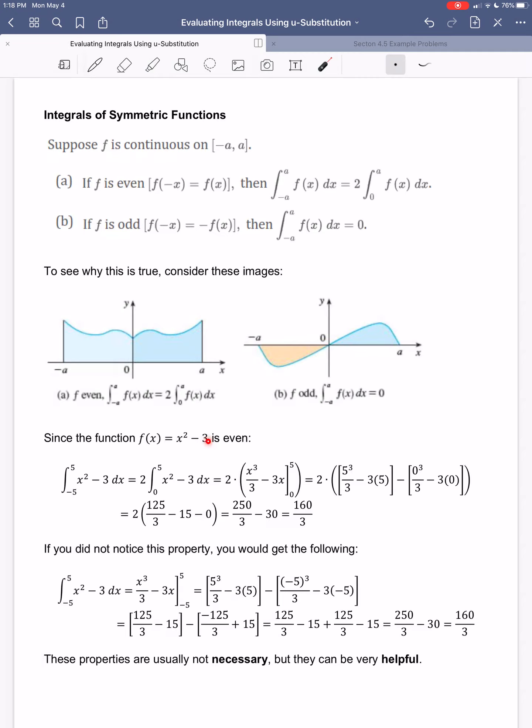Since the function x squared minus 3 is even, if I plug in a positive number for x or a negative number in for x, I get the same value out. Instead of doing the integral from negative 5 to 5, I can just go from 0 to 5 and multiply my answer by 2. So the antiderivative of x squared would be x cubed over 3. The antiderivative of 3 is just 3x. I'm evaluating from 0 to 5.